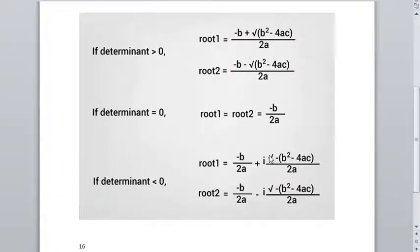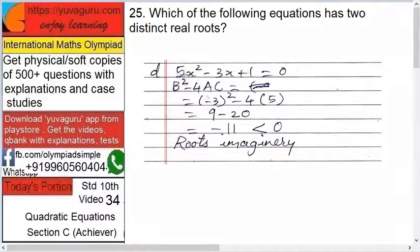See this: the roots - determinant less than 0, roots are imaginary or complex numbers. Next: 5x² - 3x + 1 = 0. So a is 5, b is -3, and c is 1. Therefore b² - 4ac equals to